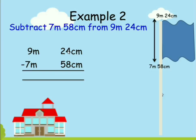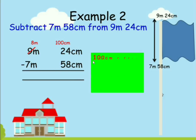So what do you need to do? You have to go to the meters place and borrow. You borrow one meter from 9 meters, then it will remain 8 meters. If you bring that one meter to the centimeters place it becomes 100 centimeters. Then you add 100 centimeters plus 24 centimeters, and that is 124 centimeters, which is larger than 58 centimeters.